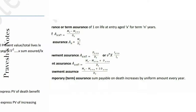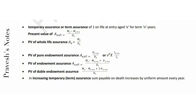Temporary assurance, or term assurance, of 1 on a life at entry aged x for term n years. Present value of A[x:n] equals Mx minus M(x+n), divided by dx.